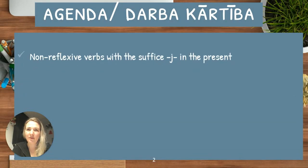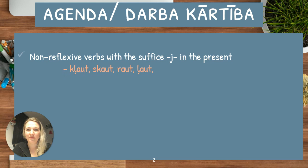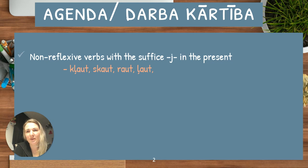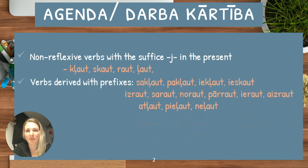We will look at four verbs — these are non-reflexive verbs with the suffix J in the present. That's how they are different from other verbs in this group, the first conjugation. These verbs are klaut, skaut, raut, and laut. Raut and laut will be more common verbs for learners at level A2, while klaut and skaut would come much later.